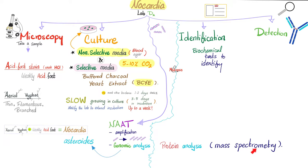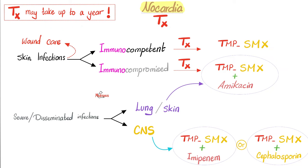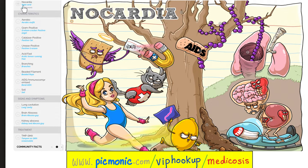Treatment-wise, it can take up to a year of antibiotic treatment to get rid of Nocardia — remember, my patient recovered after 55 days. For wound care, proper wound management is important. For skin infection in an immunocompetent patient: TMP-SMX. If immunocompromised: TMP-SMX plus amikacin. For severe or disseminated nocardiosis — such as lung to brain or lung to skin — TMP-SMX plus amikacin. For neurological symptoms and brain disease: TMP-SMX plus amikacin or TMP-SMX plus a cephalosporin.